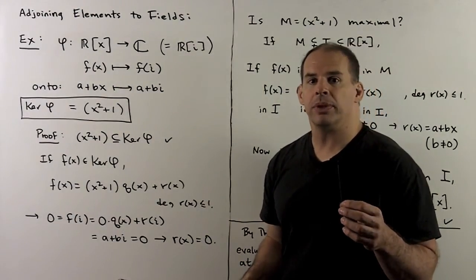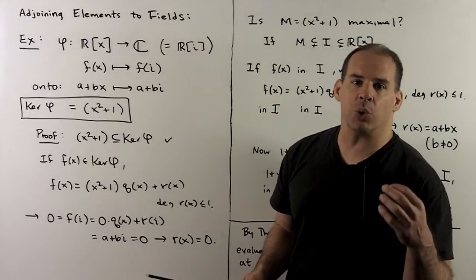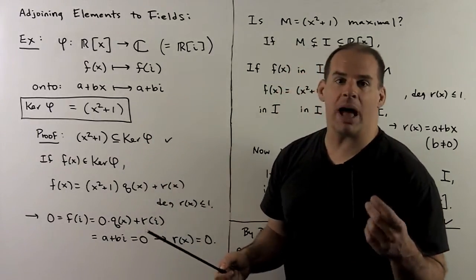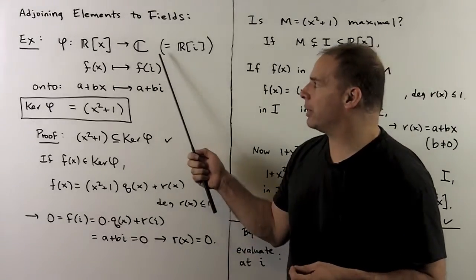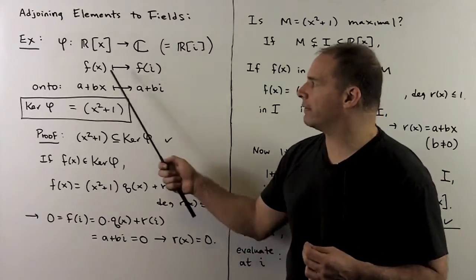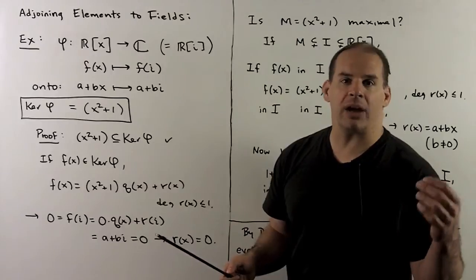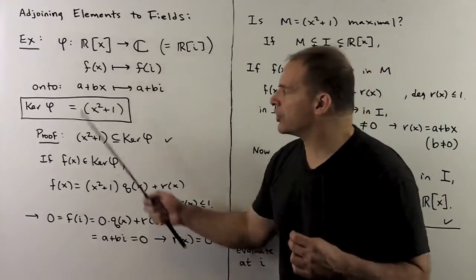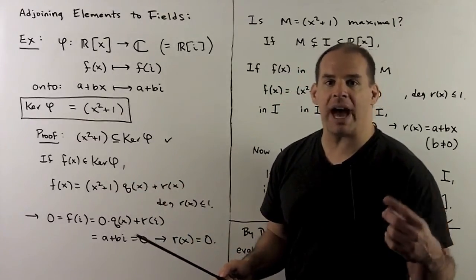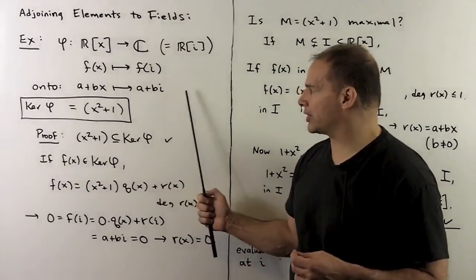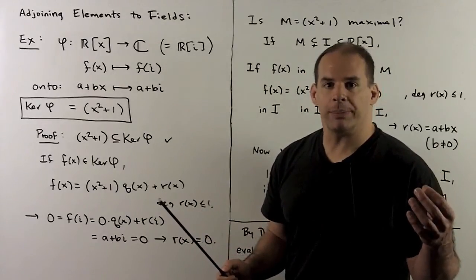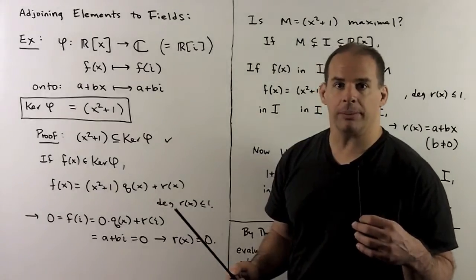Another way to use the theorem: we can construct new fields from old fields by adjoining elements. Consider the map φ from ℝ[X] — polynomials in X over ℝ — into the complex numbers, where φ is evaluation at i, carrying each polynomial f(X) to f(i). We've seen before that evaluation is a ring homomorphism. Here it's onto: each linear polynomial A + BX is carried to A + Bi, and since A and B can be any real numbers, we get all complex numbers. So we have an onto ring homomorphism.